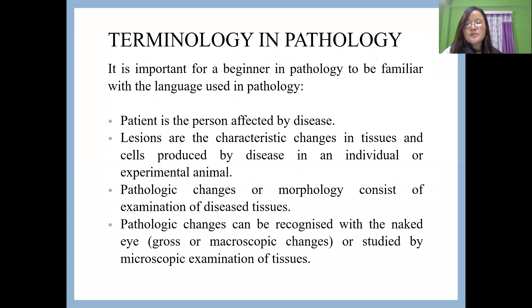There are different terms which are important when studying human pathology. The first one is 'patient' — patients are persons who have been affected by the disease. The next term is 'lesions.' Lesions are characteristic changes in the tissue or a cell in an individual or an experimental animal which have been produced by the disease.